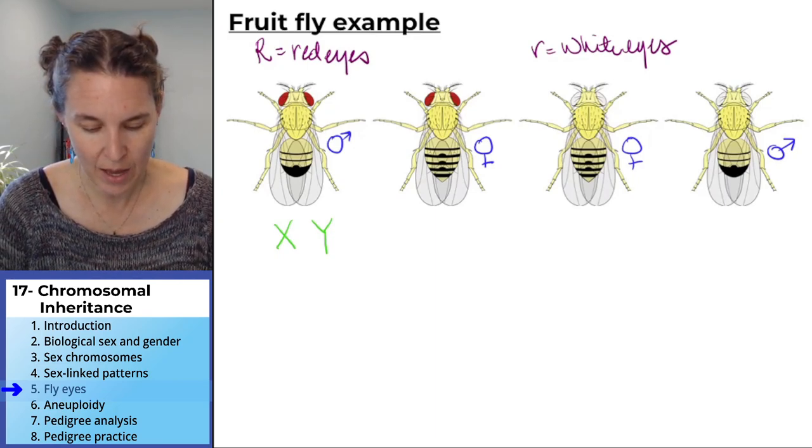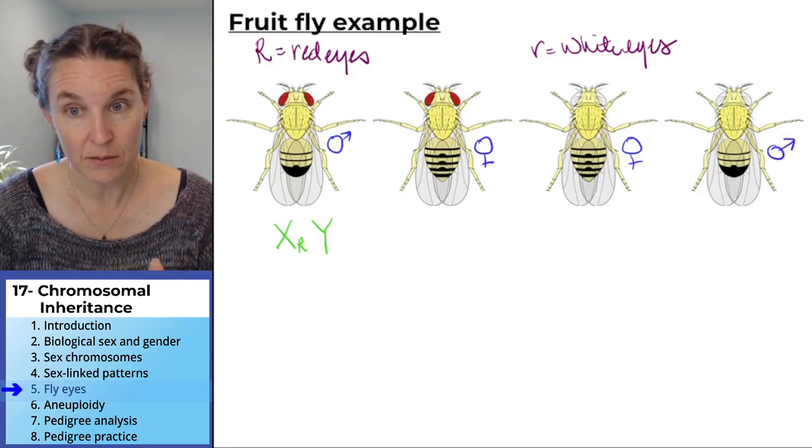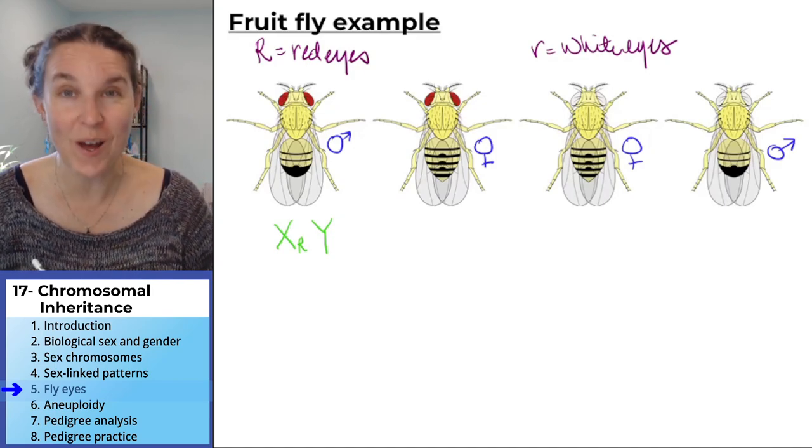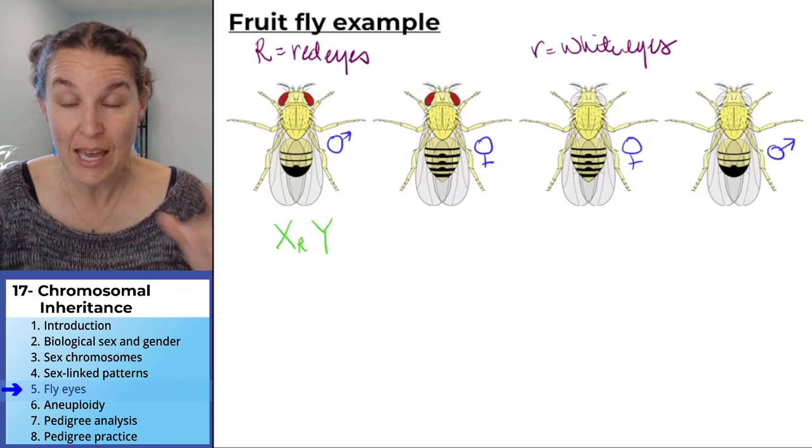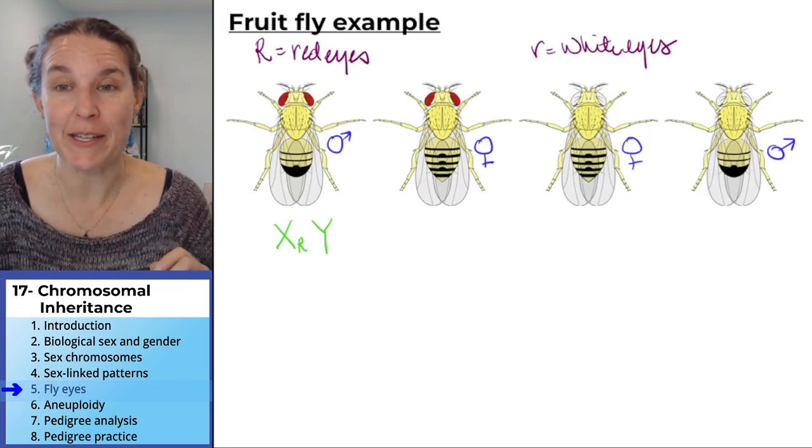He could have—we know he has at least one dominant allele. Oh wait, we know he's a dude and he only has one X chromosome, so that's it, that's his genotype. I'm done. He just has one big R to throw around.